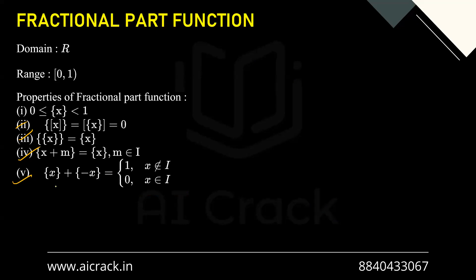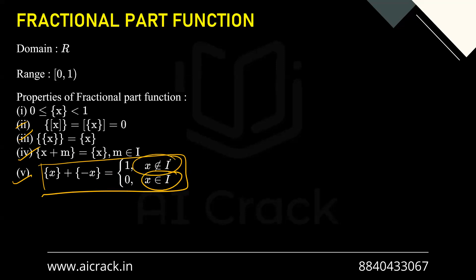For the last property of the fraction part function, you can derive it yourself by taking two cases — integral values and non-integral values — just like we did for the GIF function. Take both conditions and justify the result.